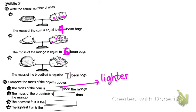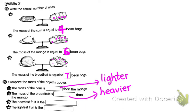Sentence B: the mass of the breadfruit is heavier than the mango. The heaviest fruit: corn equals four bean bags, mango equals six bean bags, and breadfruit equals seven bean bags. So the heaviest is the one with the largest number of bean bags — the breadfruit is the heaviest.